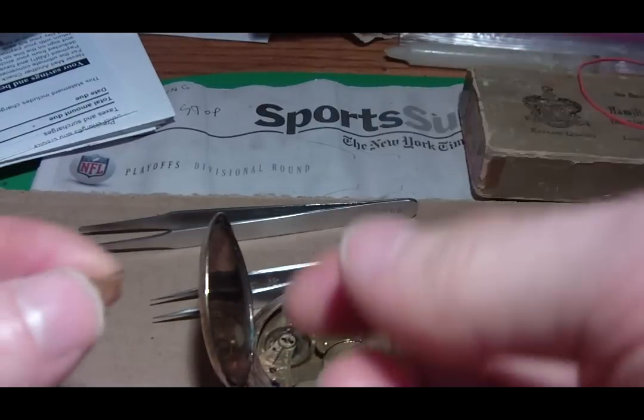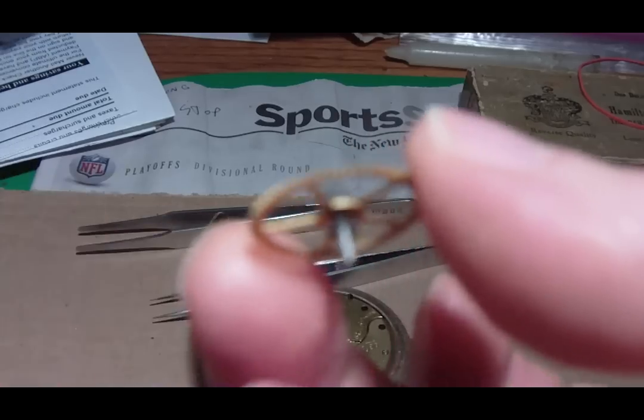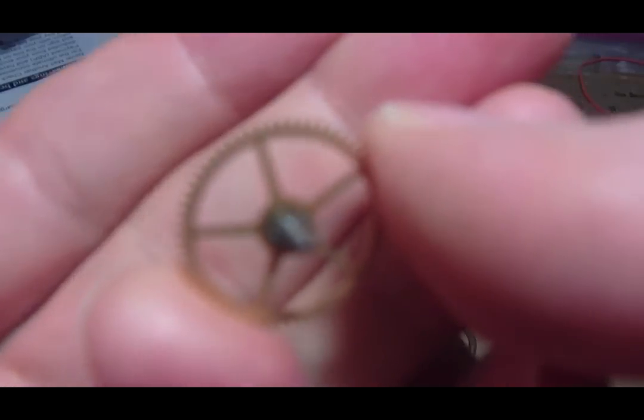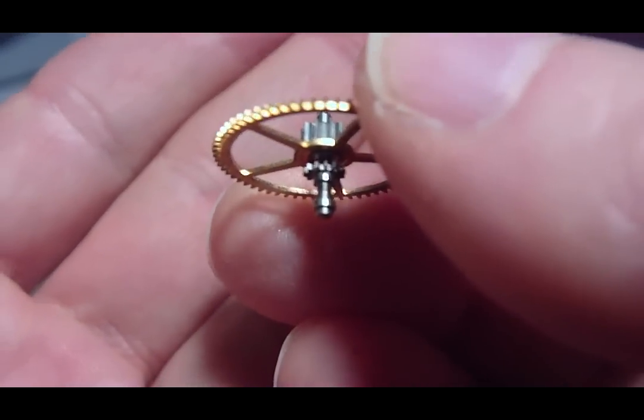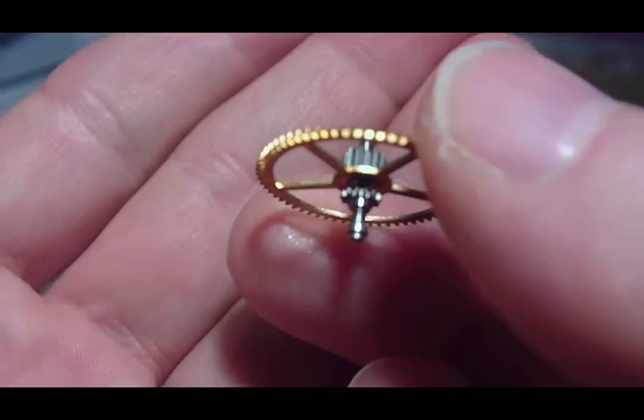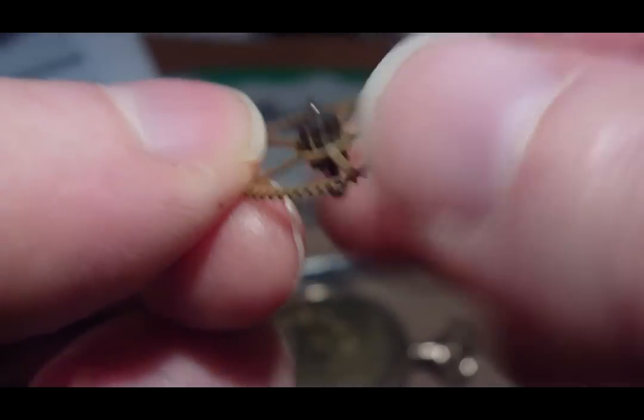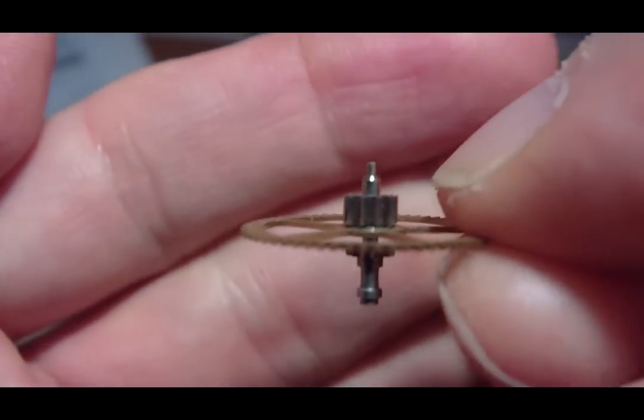I found in my pile of miscellaneous parts this center wheel assembly. There is the canyon pinion pointing down, and there's the center wheel, and then there's the safety pinion.